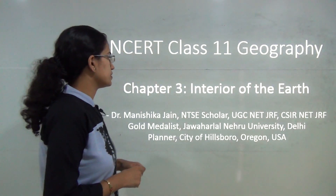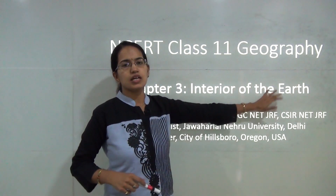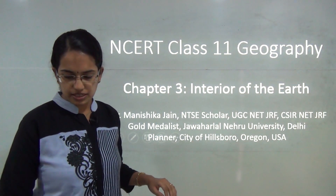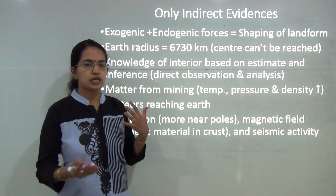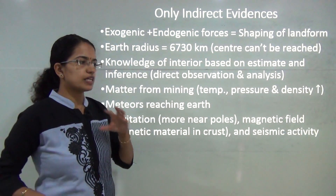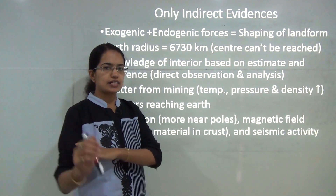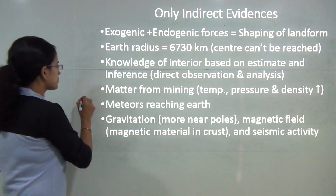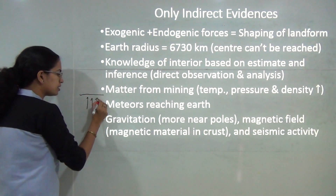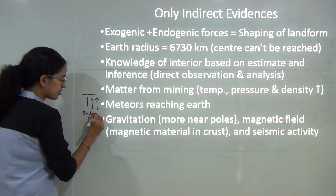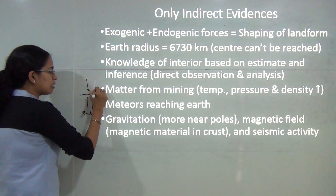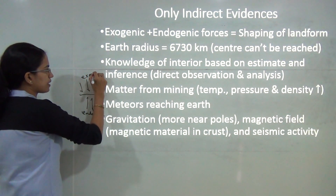We would be starting with Class 11 Geography Chapter 3, that is Interior of the Earth. Most of the topics we have already covered in separate sessions, so today is a quick recap. Whenever a landform is forming, there are two factors that act on it: endogenetic factors, which occur from the inside of the earth, and exogenetic factors, which are from the outside.